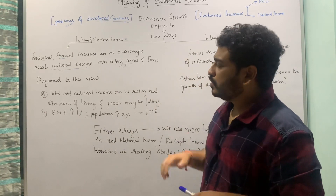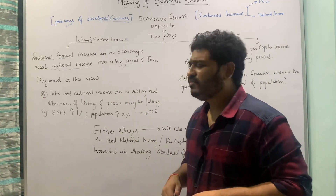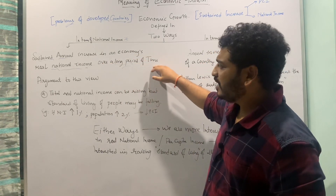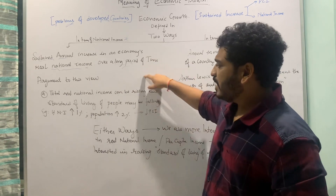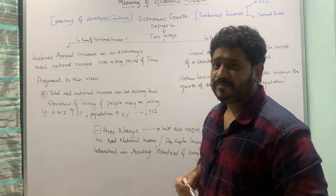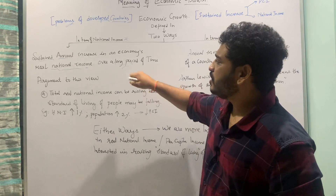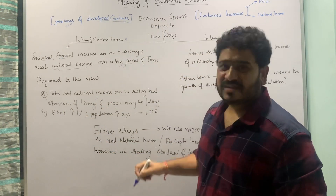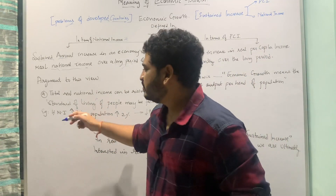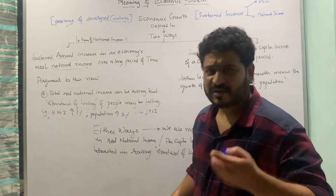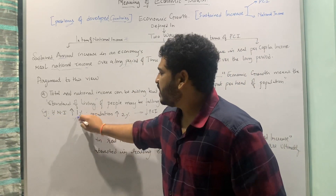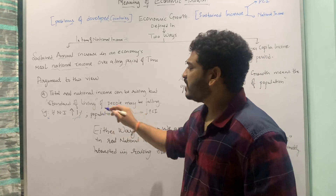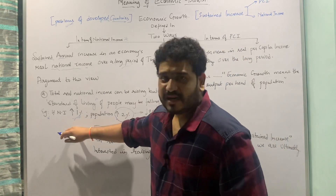However, if you are talking about a sustained annual increase in an economy's real national income over a long period of time, it fails to account for something called the standard of living of the people. If there is an increase of one percent in national income, the underlying change in population is always greater than the increase in national income.